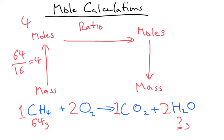So we've got 4 on the left. The ratio is 1 to 2. So if I've got 4 on the left hand side I'm going to have 8 on the right hand side.